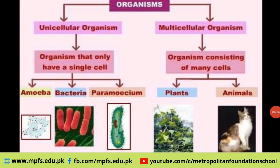Now let's look at the difference between unicellular and multicellular organisms — what differences exist between the two. Difference one: unicellular organisms consist of one cell only, while multicellular organisms consist of many cells.